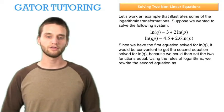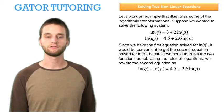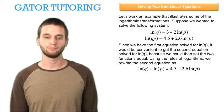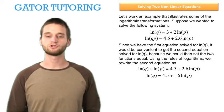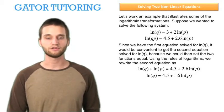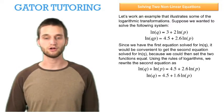Using the rules of logarithms, we can rewrite the second equation as the natural log of q plus the natural log of p equals 4.5 plus 2.6 times the natural log of p. Then we can subtract the natural log of p from both sides and obtain the natural log of q equals 4.5 plus 1.6 times the natural log of p.